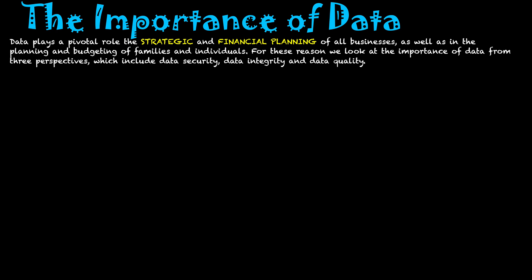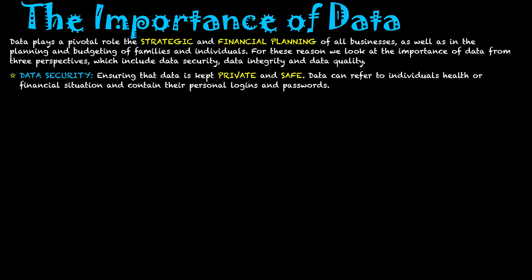Firstly, we have data security, which is ensuring that data is kept private and safe. Data stored in these systems can refer to individuals' health or financial situation and contain things such as their personal logins and passwords, which is obviously very valuable to people such as hackers trying to get into the system. So we need to make sure that on these information systems we have firewalls, we use antivirus software, and obviously keep up-to-date good logins and passwords for our users, so that data is protected on these systems.